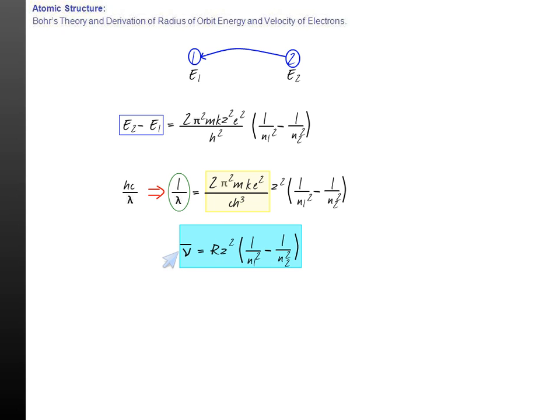From this, if anybody wants to convert this into energy, we know ν̄ equals 1 by λ, so if we multiply this by hc, we can arrive at this conclusion. So we can also write E is equal to Rz² × hc × (1 by n₁² minus 1 by n₂²).